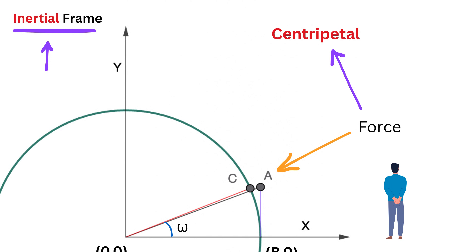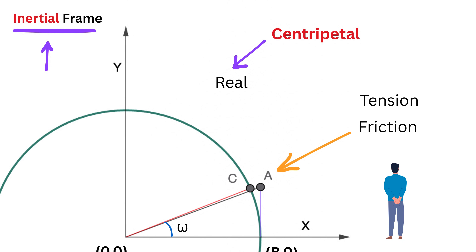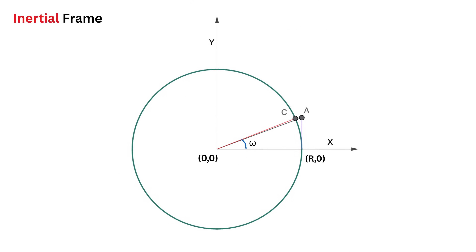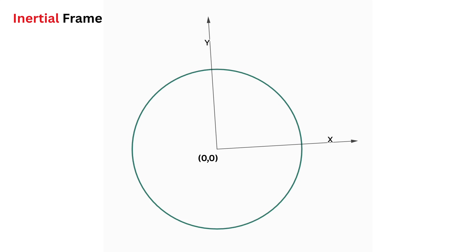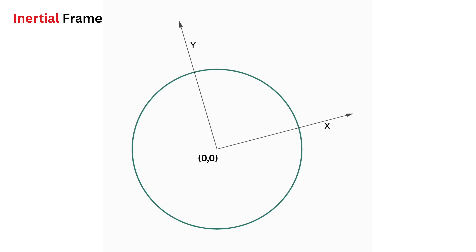This force is called centripetal force — a real force in the inertial frame required to keep an object moving in a circular path by constantly pulling it inward toward the center. It can be a friction force, tension in a string, or any other physical force providing the inward pull.